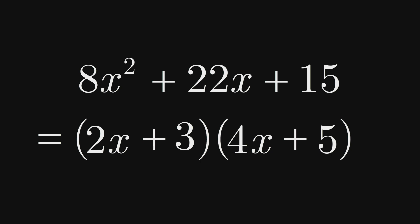We know that in expanding the factored expression here, 2x times 4x gives us the 8x squared term of the trinomial, and 3 times 5 gives us the trinomial's constant term of 15. But what about the trinomial's 22x term? How does that relate to the factored expression?